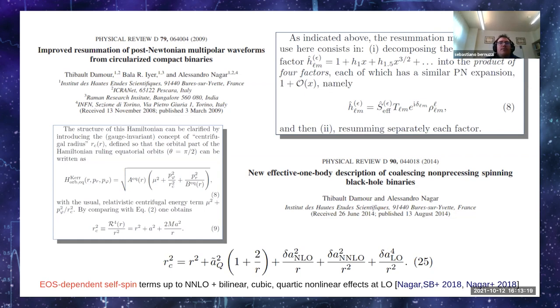The second one is an approach to the spinning EOB Hamiltonian based on the concept of centrifugal radius that allows us to write the orbital part of the Hamiltonian in a way that is formally identical to the non-spinning one. Also for binary neutron stars, it allows us to include easily terms that are quadratic in the spin of a single component and that are equation of state dependent.